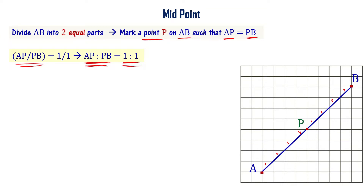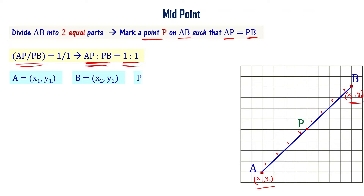Let me say that A is x1 comma y1 and B is x2 comma y2. What are the coordinates of A? x1 comma y1. And B coordinates are x2 comma y2. Now, can you find what are the coordinates of P?